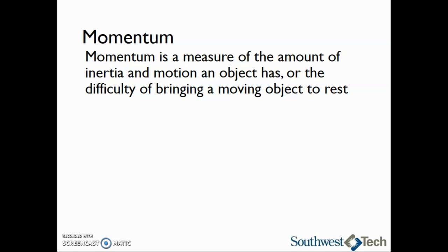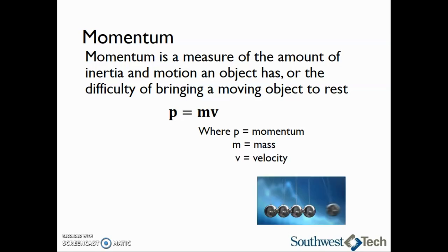If we want to calculate momentum, the equation we will use is p equals m times v, where p is the momentum, m is the mass, and v is the velocity. Units for momentum will be kilogram meters per second in the SI system and slug feet per second in the English system.